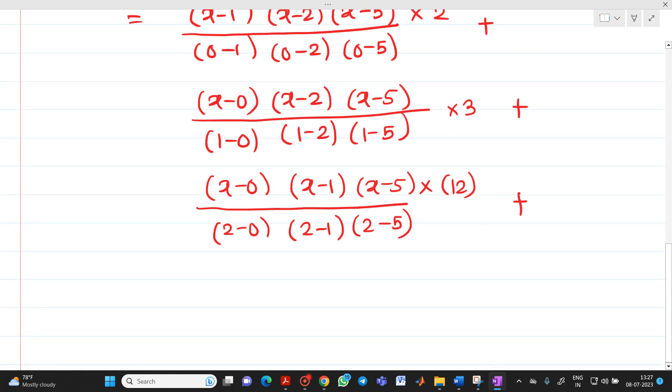x minus 0, x minus 1, x minus 2, divided by 5 minus 0, 5 minus 1, 5 minus 2, into 147.